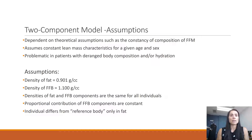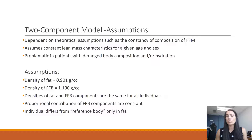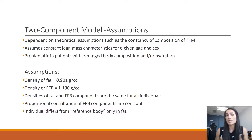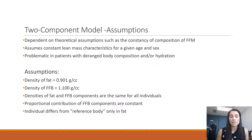The two-component model is dependent on assumptions that basically say there are consistencies in characteristics such as age and sex for individuals. So regardless of who you are, if you're of a certain age or sex, we're going to assume certain things about you. This can be problematic for people who have slightly different body compositions than others of the same age or sex.